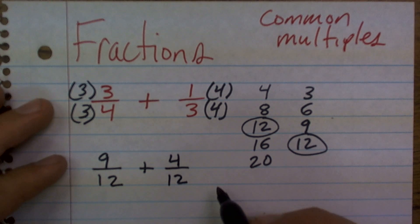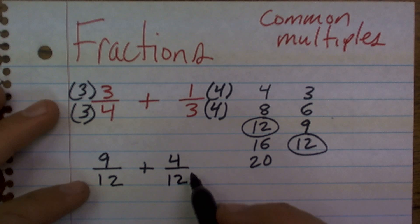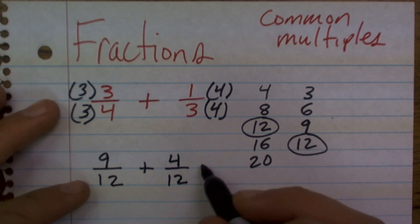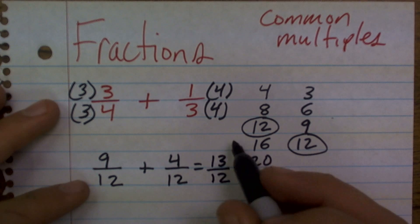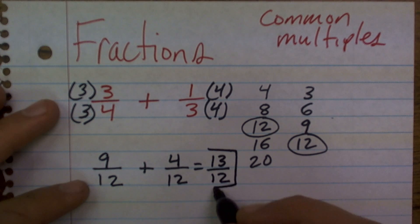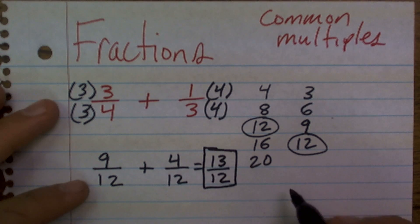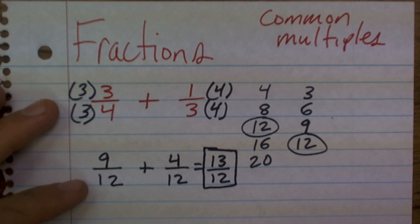So now what you guys can see is now I can simply add up my answer, and what I'll end up getting is 13 over 12. Now, so that's one way to find your equivalent multiple. That's one tip.